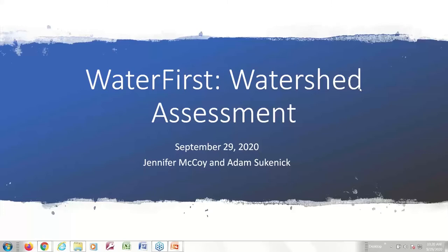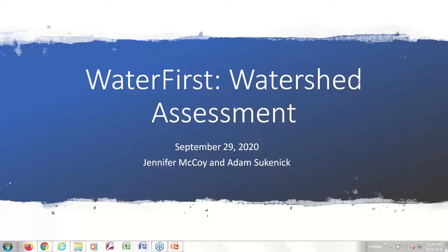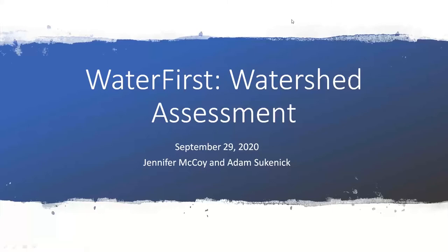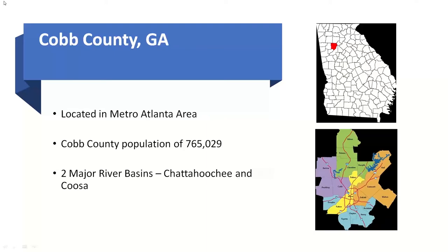Good morning and thanks to everybody for attending and for hosting as well. I tried to cover a lot of the topics from the Water First checklist — so it's quite a bit. For those of you not familiar with Cobb County: we're in the metro area with a pretty good population, and perhaps most interesting for this presentation, we have two major river basins — Chattahoochee and Coosa. The northwest area drains up to Coosa and the southeast drains towards Chattahoochee.